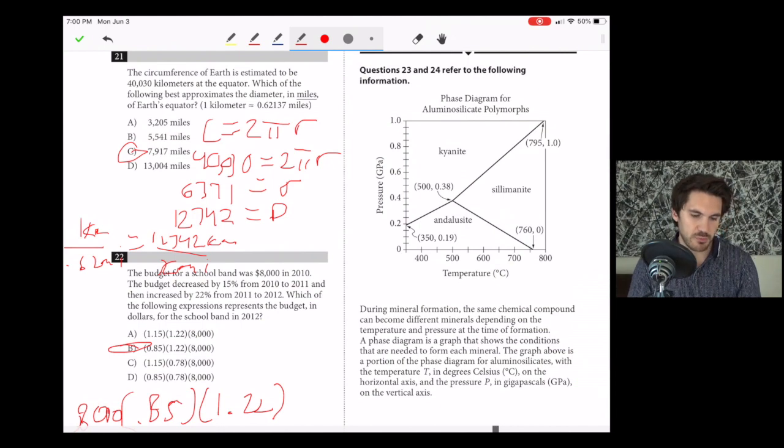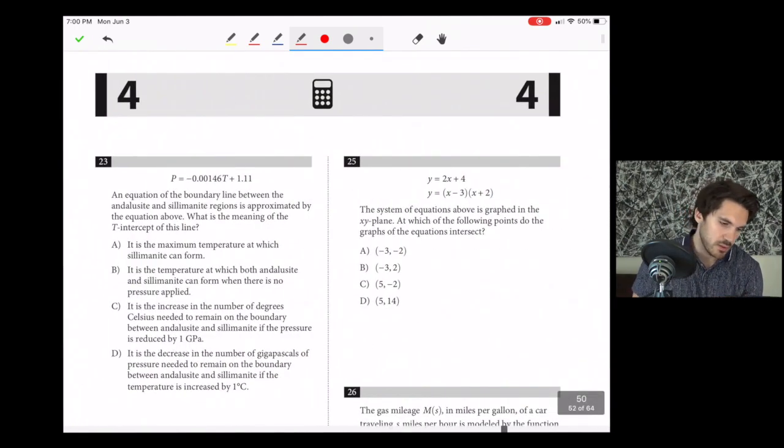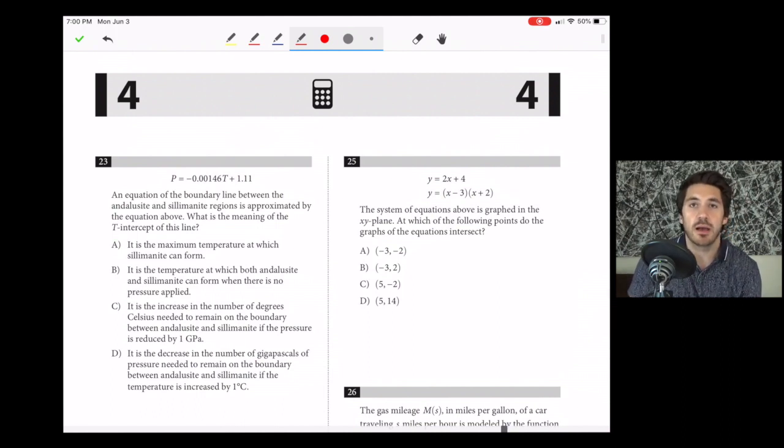Numbers 23 and 24 refer to this information. Number 23, an equation of the boundary line between Kyanite and Sillimanite regions is approximated by the equation above. What is the meaning of the T-intercept of this line? When they say T-intercept, it's like the Y-intercept. Think of what a Y-intercept is: where your graph starts when X equals 0. It is the temperature at which these things can form when there's no pressure applied, when something equals 0. It's not a slope. So B is our answer.